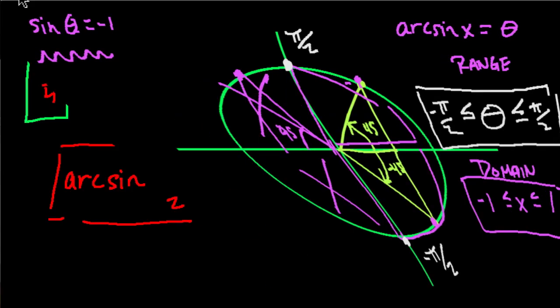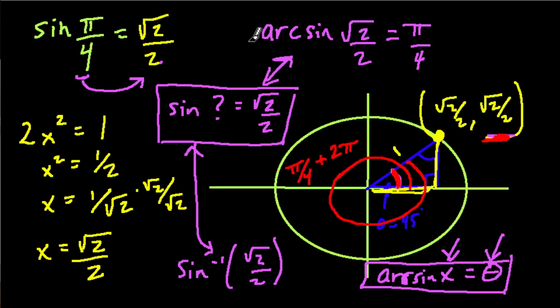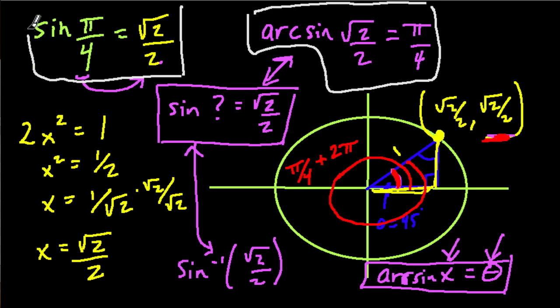In the first problem, we found the arc sine of √2 over 2 and got π over 4. And we kind of knew that already from our investigation for the sine. So now I'm going to show you how do you find the arc sine if you didn't have this prior knowledge. Let's try a different problem. This time, I'm going to show you the whole process. We're going to use the arc sine of a different value. Let's try negative √3 over 2. We want to know what theta gives us this value.